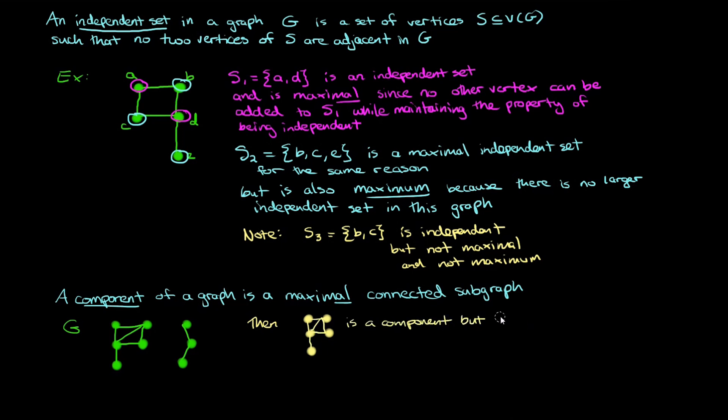But this smaller piece is not, it's missing a vertex. And also this smaller piece is not because it's missing an edge. Also note that this path on three vertices is a component. It's this piece right here on the right hand side of the graph. And that's because it's maximal, even though it's not maximum.